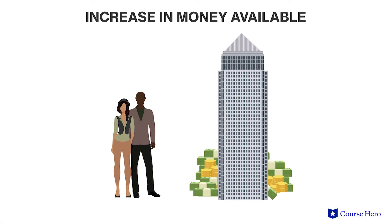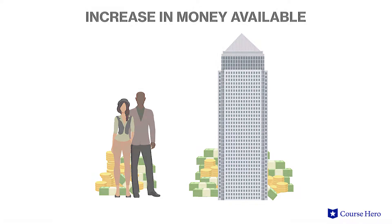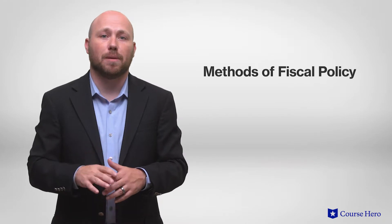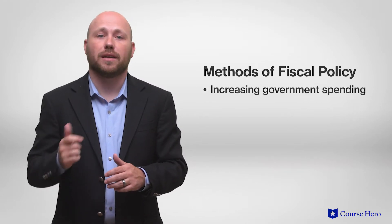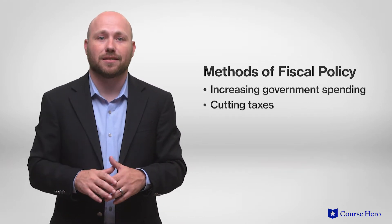An expansionary policy increases the amount of money available to companies and households in an economy. This is achieved through two main methods of fiscal policy: increasing government spending and cutting taxes.